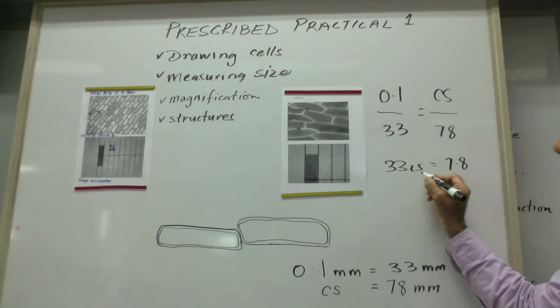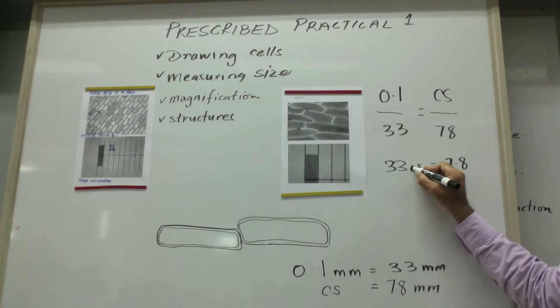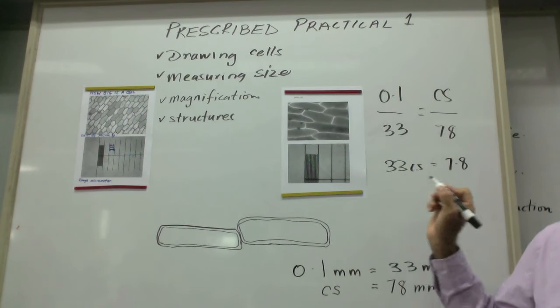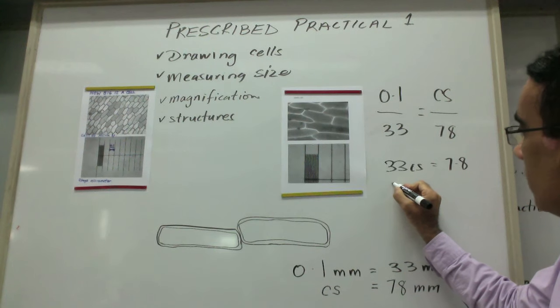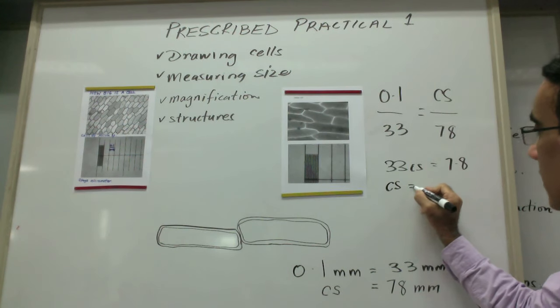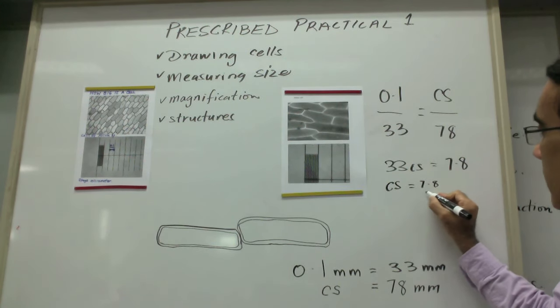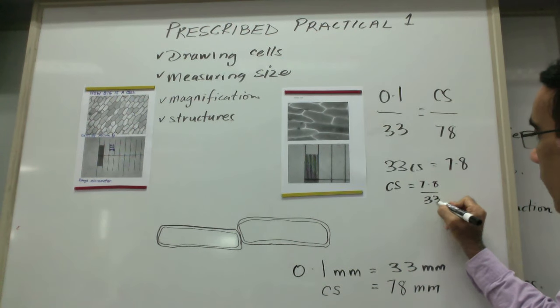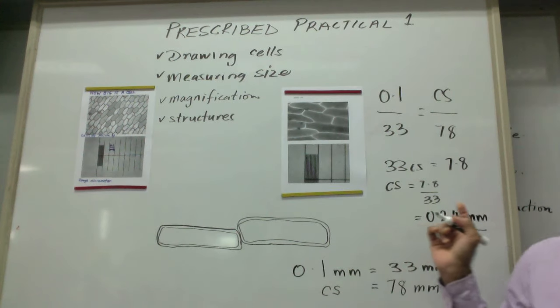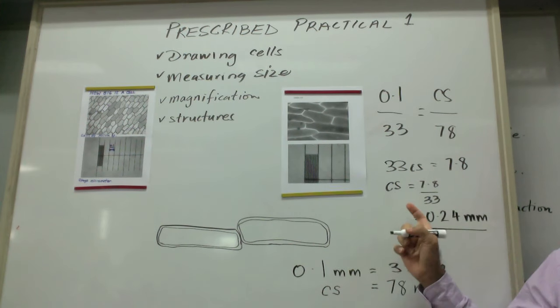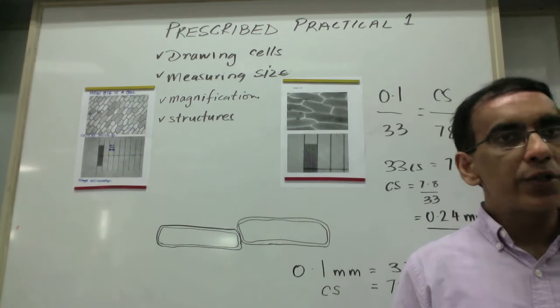Then we need to solve for CS. How can we make CS on one side by itself? We divide by 33, and that would mean that CS, the cell size, is equal to 7.8 divided by 33.